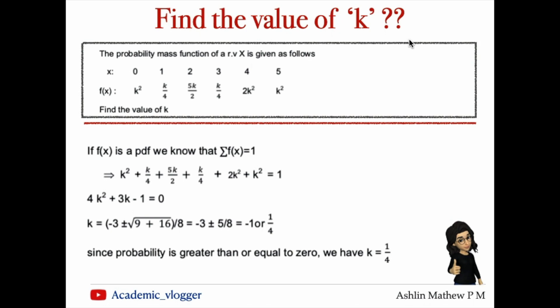From these values, we need to choose either -1 or 1/4 as the root to 4k² + 3k - 1 = 0. Here we can find